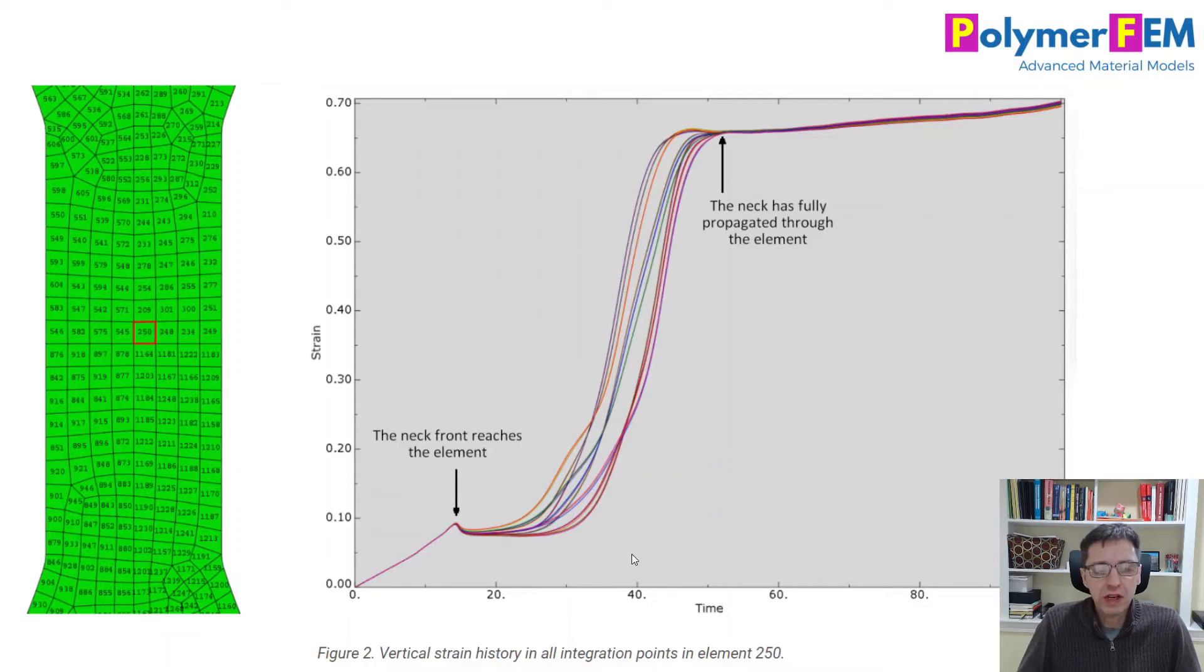These are the results that I get. We see that initially all integration points are the same. Then once we start to get necking at this element location, the curves diverge, that some of the integration points start to neck or harden faster than other ones. So we see this variability in the strain in the specimen at that point.